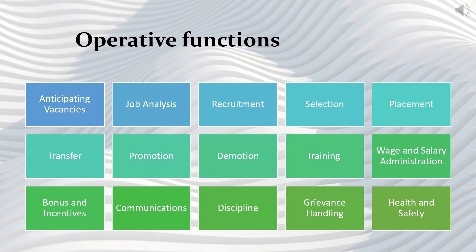Then next is demotion. If someone has not performed well, they get demoted. The human resource manager establishes policies regarding demotion. Demotion may occur because of a failure of the employee to meet job requirements, or if they are not performing well or not following the manager's direction. In all such situations, demotion is carried out.